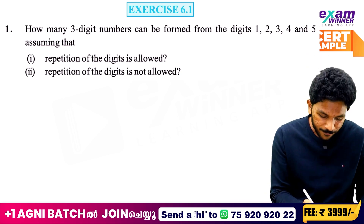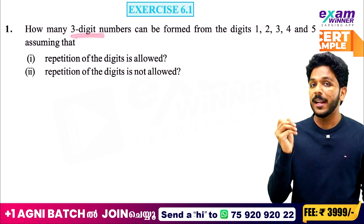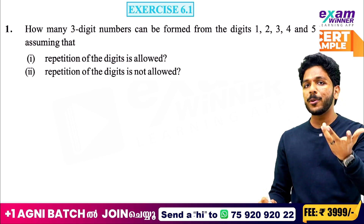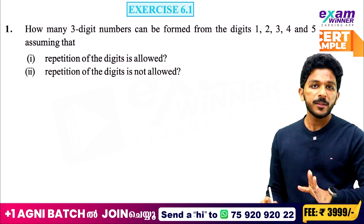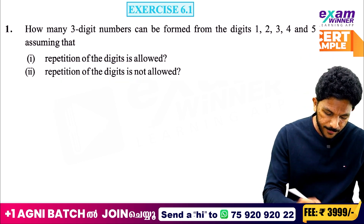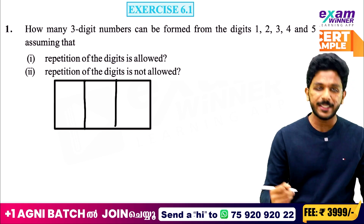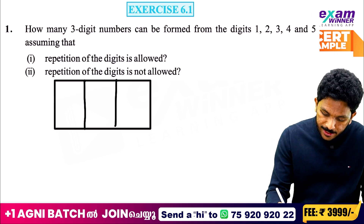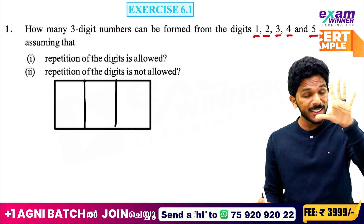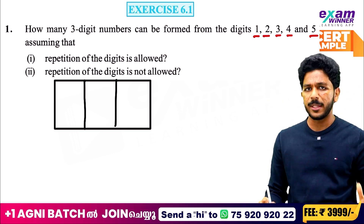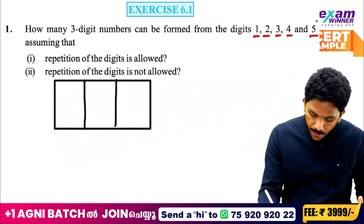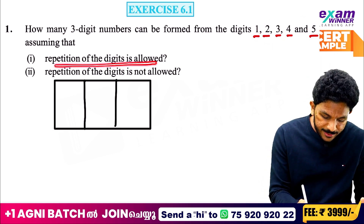How many 3-digit numbers can be formed? You just need to write the logic. You will write 3 digits and find what you want. Given digits are 1, 2, 3, 4, 5 — you will write 5 to the same number. Each place will be filled with these 5 digits.